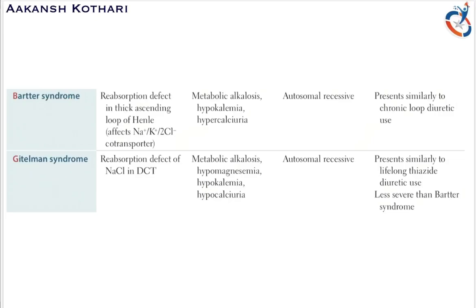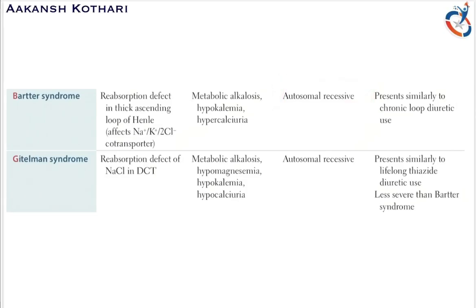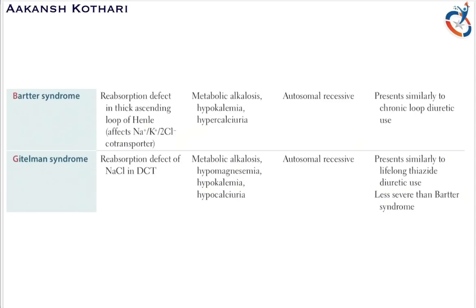The effects of Bartter syndrome are metabolic alkalosis, hypokalemia, and hypercalciuria. Hypercalciuria is the distinguishing feature between Bartter syndrome and Gitelman syndrome. There is an autosomal recessive cause, so it is genetically transmitted, and it presents similarly to chronic loop diuretic use. In loop diuretic use, there is excessive diuresis due to blocking of this channel, and the same thing happens in Bartter syndrome.